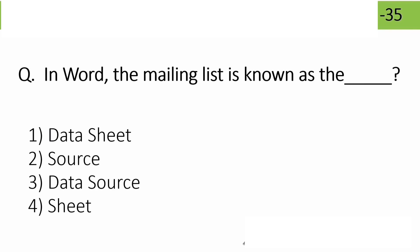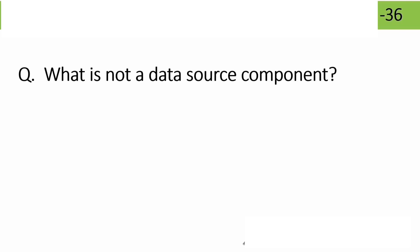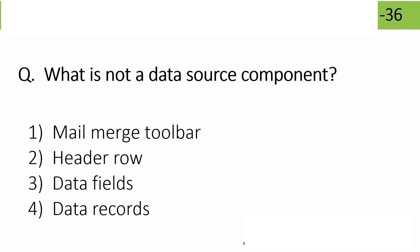The mailing list is known as what? The correct answer is data source — a mailing list is called a data source. What are the components of a data source? Components include: header row, data files, and data records.